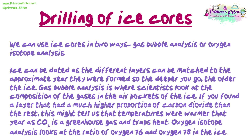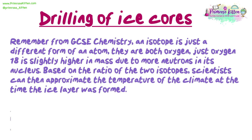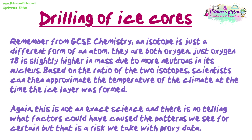Oxygen isotope analysis looks at the ratio of oxygen-16 and oxygen-18 in the ice. Remember from GCSE chemistry, an isotope is just a different form of an atom. They are both oxygen, just oxygen-18 is slightly higher in mass due to more neutrons in its nucleus. Based on the ratio of the two isotopes, scientists can then approximate the temperature of the climate at the time the ice layer was formed. Again, this is not an exact science and there is no telling what factors could have caused the patterns we see for certain, but that is a risk we take with proxy data.